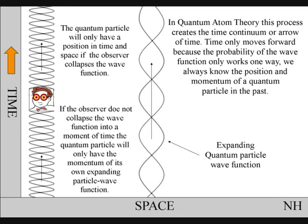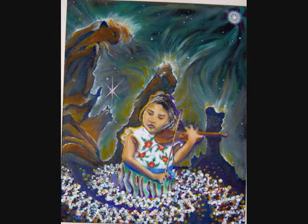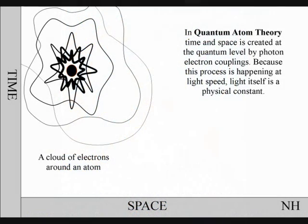We always know the position and momentum of a quantum particle in the past. In this theory, there is no absolute or universal time because atoms create their own time relative to their position and momentum. This fits in with Einstein's theory, special relativity.